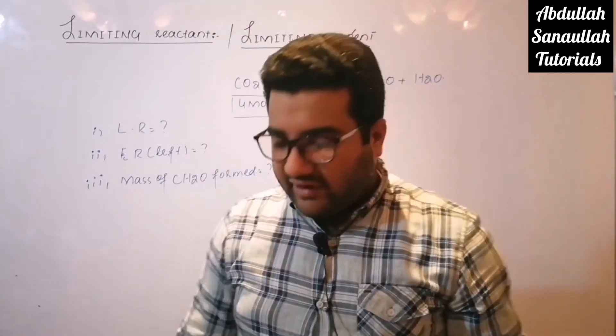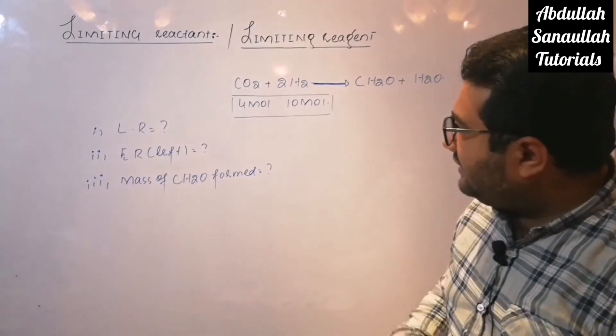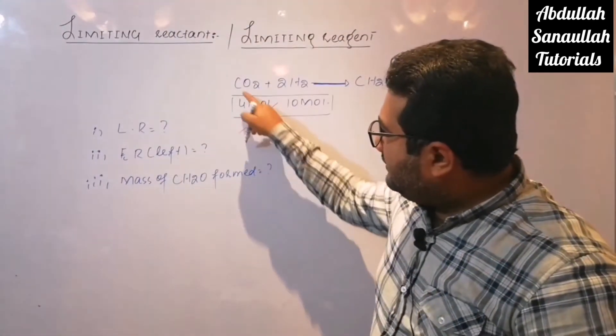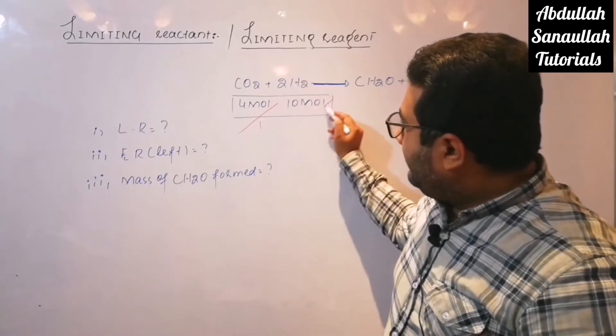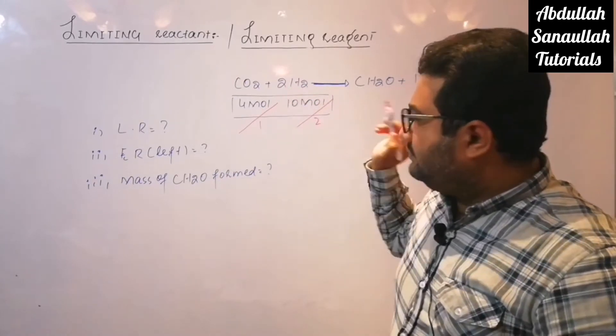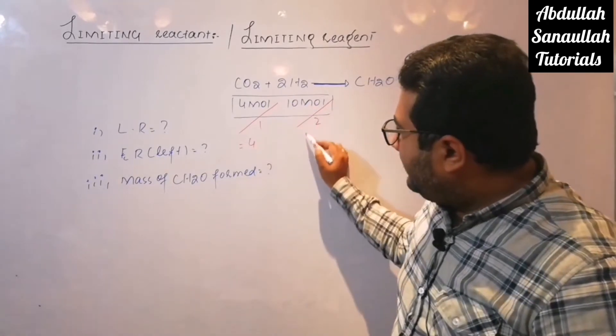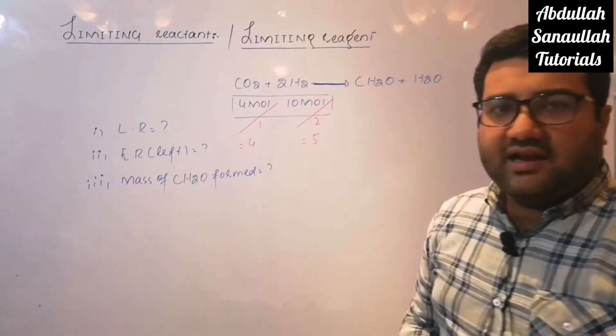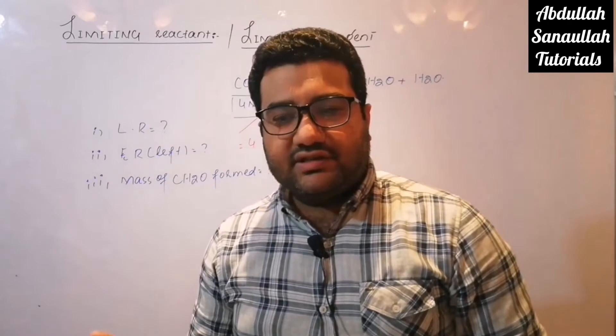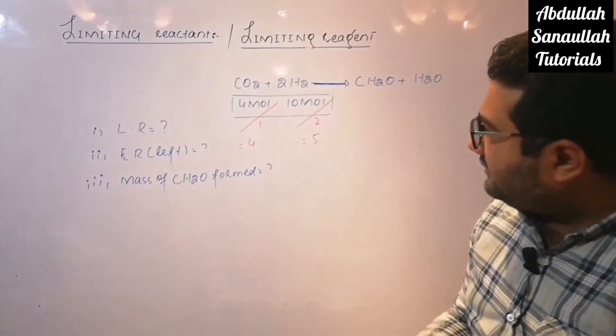Again, divide the molar quantities with the coefficients. The coefficient of carbon dioxide is one. The coefficient of hydrogen is two. Now the answer will be four here and here the answer will be five. And the reactant in which we will get smaller answer, that will be our limiting reactant.